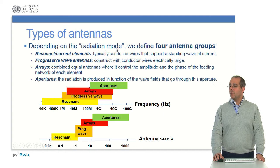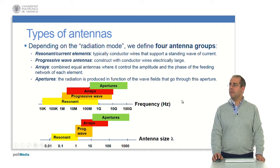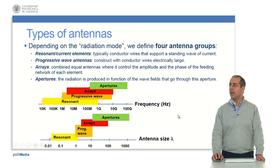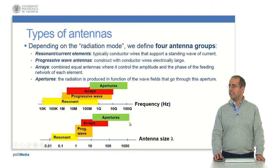What types of antennas do we have? Depending on the radiation mode, we define four antenna groups. First, the resonant current elements, typically conductor wires that support a standing wave current. Then progressive wave antennas, constructed with conductor wires that are electrically large. Then array antennas, which combine equal antennas where it controls the amplitude and phase of the feeding network of each element. And finally, the aperture antennas, where radiation is produced as a function of the wave fields that grow through the aperture. We can compare the different types of antennas in terms of antenna size as a function of wavelength; resonant antennas are smaller than aperture antennas.